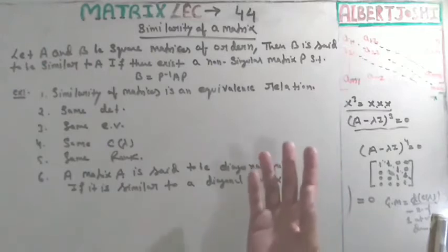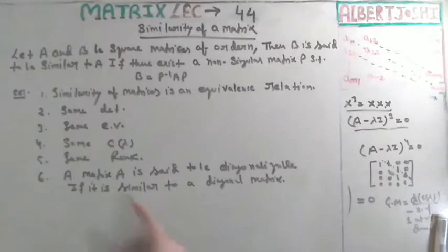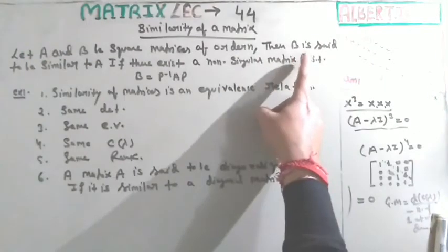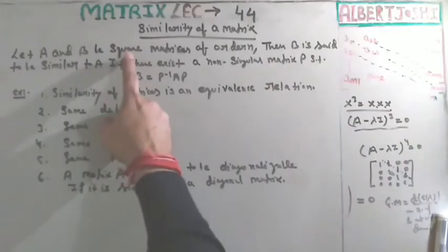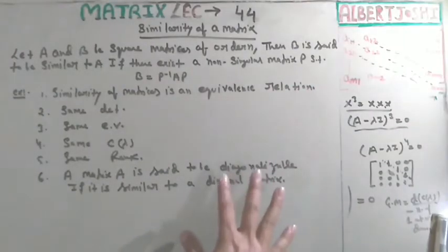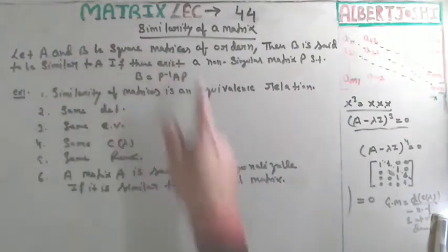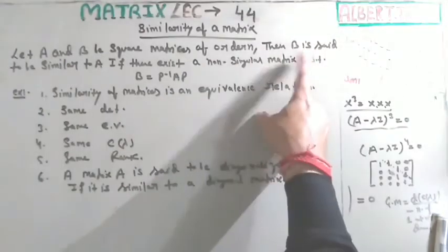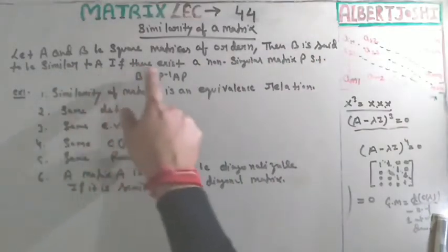So how to find this — we have written here the definition. Let A and B be two square matrices of order n. Note that we are talking about square matrices because we are also finding the inverse of such matrices, so they must be square. Then B is said to be similar to A if there exists a non-singular matrix P.